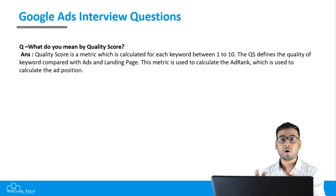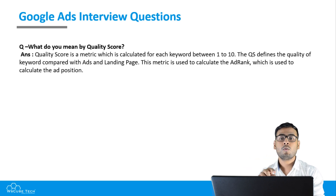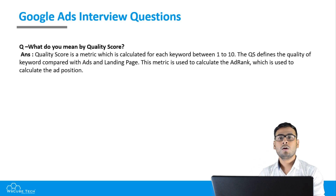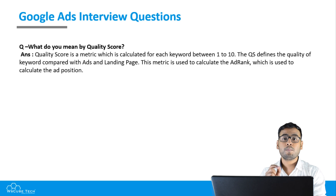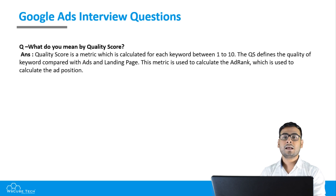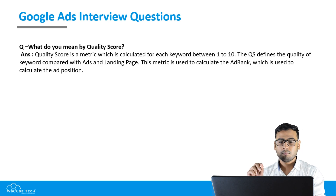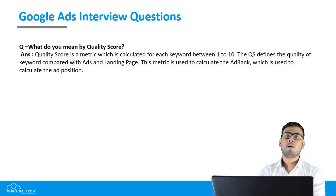You need to understand the importance of quality score to convince your interviewer. You don't need to know the formula or the exact numerical value — what matters is understanding the concept. Google provides a quality score because in Google Ads, ranking is the most important thing. Without a good rank, your ad cannot perform well. Let's look at the general and technical answer.